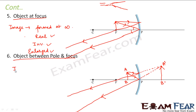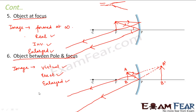The most important thing about the image in this case is that it is virtual. The image is also erect because it is above the principal axis, and the image is enlarged. Another key point is the location: the image is on the other side of the mirror. Till now images were on the same side as the object, but in this case the image is on the opposite side of the mirror.